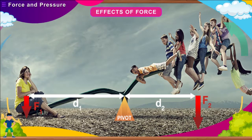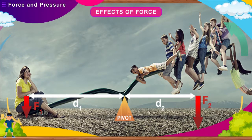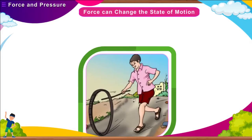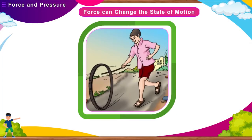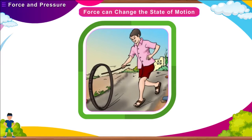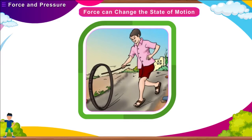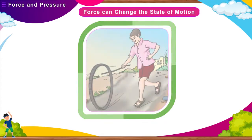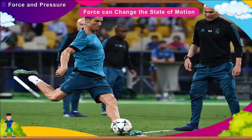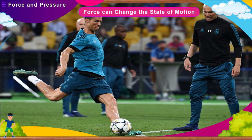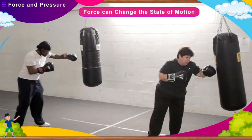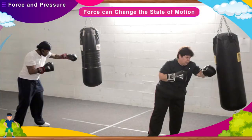Force can bring about a number of changes. Force can change the state of motion. When force is applied on a body at rest, it begins to move. For example, a football kept on the ground starts moving when kicked, and a boxing bag starts oscillating when punched.